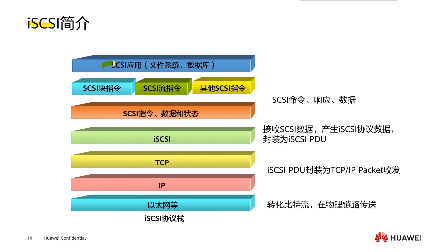iSCSI refers to the combination of the SCSI interface and Ethernet technology. The iSCSI protocol encodes user requests according to SCSI rules to generate a Command Descriptor Block (CDB). The iSCSI layer generates iSCSI PDUs (Protocol Data Units) from the CDB, then encapsulates these PDUs into IP packets for transmission in Ethernet. iSCSI is essentially a transport layer protocol of SCSI, using mature IP network technology to extend SCSI and provide users with high-speed, low-cost, long-distance storage solutions. In other words, iSCSI is a standard for block data transmission on TCP/IP — also understood as SCSI over IP.